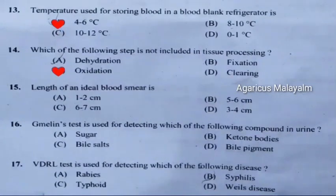Fifteenth question: Length of an ideal blood smear is. Correct answer is Option D: Three to four centimeters.